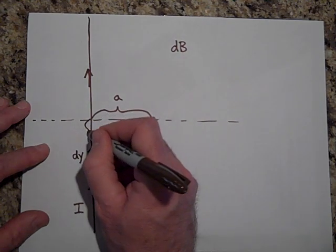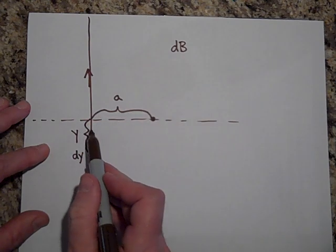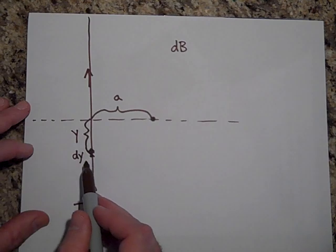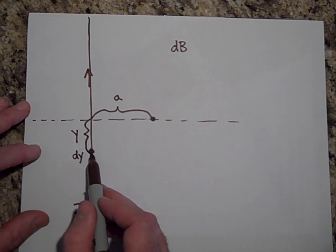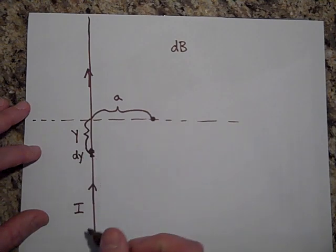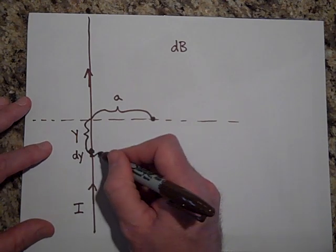And this is down here, a distance of Y down here. So it's down a distance Y from the origin. And the thickness of this little bit of wire is DY, or the height of that wire is DY. Okay, well,